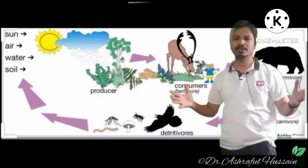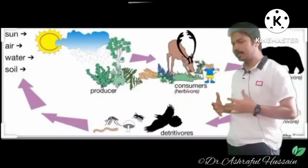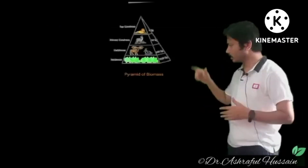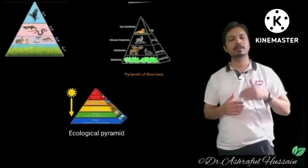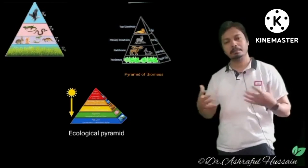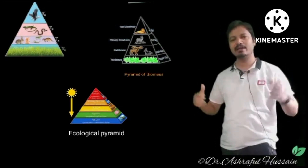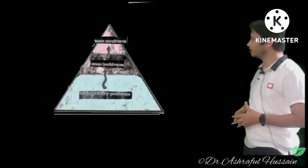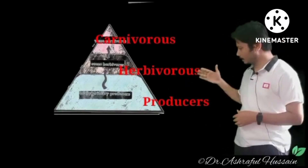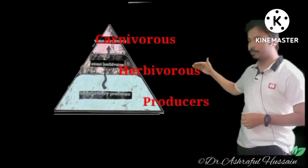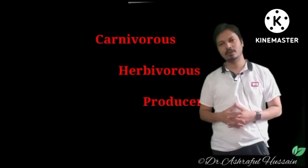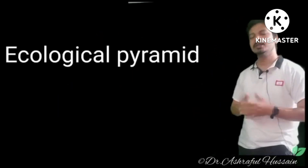Ecological pyramid refers to the different organisms in our ecosystems. It is a graphical representation of the relation among the organisms — from producers, then herbivores, then carnivores. Those relations can be represented by a pyramidal structure. That is called an ecological pyramid.